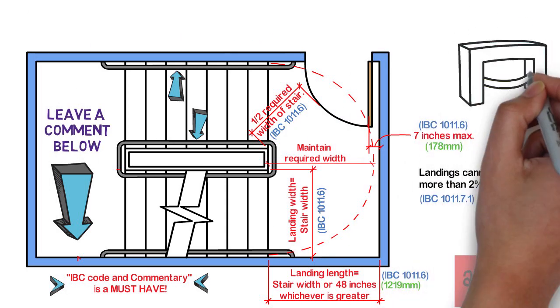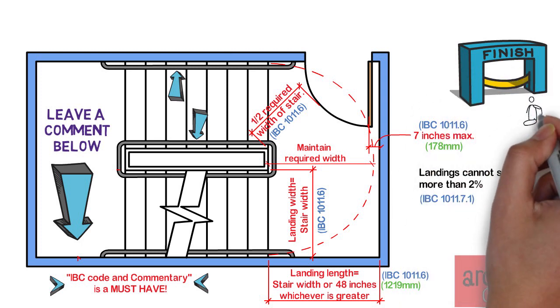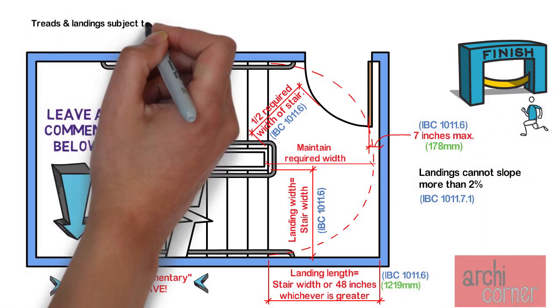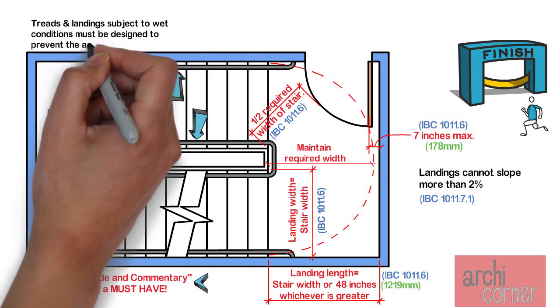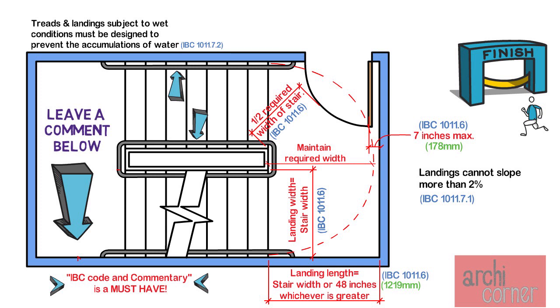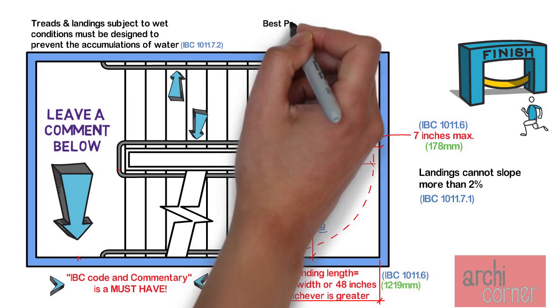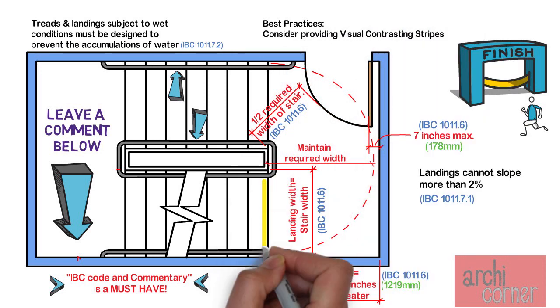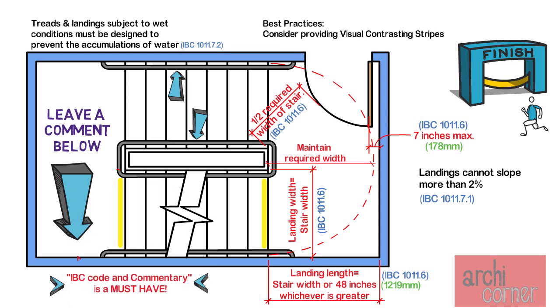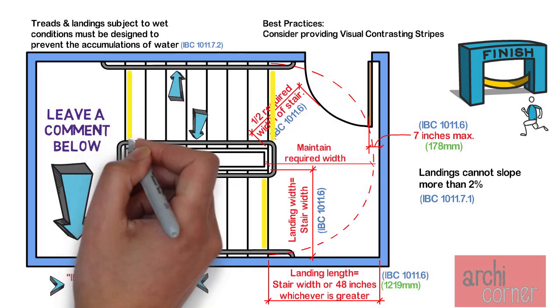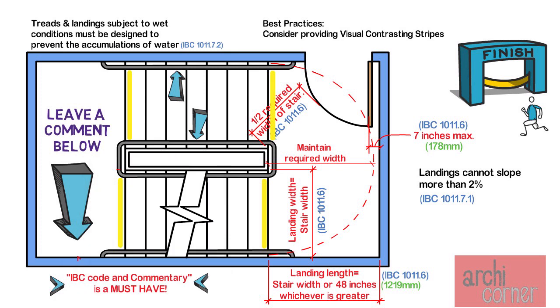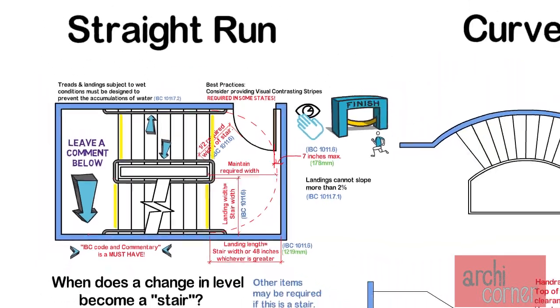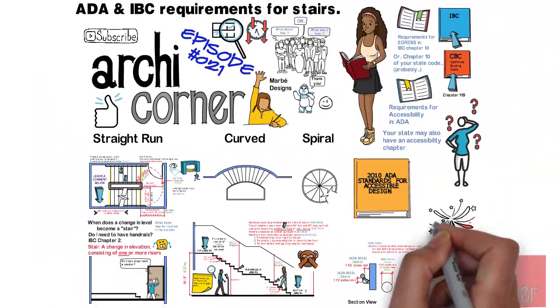Alright guys, we're almost there. Just a couple of random things that are also required is that stair treads and landings subject to wet conditions, usually at exterior locations, they need to be designed to prevent the accumulation of water. And last but not least, this is actually not a requirement, but a best practices item. Visual contrasting stripes are not required by the ADA. However, DOJ advises placement of visual contrast on tread nosings or at the leading edges of treads that do not have a nosing so that the stair treads are more visible for people. Which kind of makes sense. I know that in California where I live, visual contrasting stripes are a requirement.